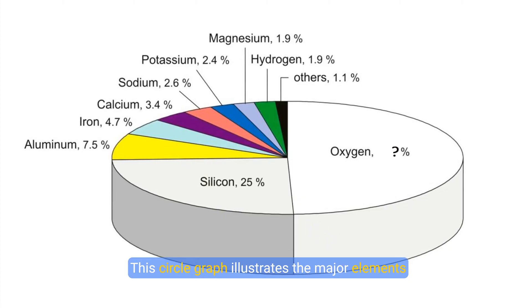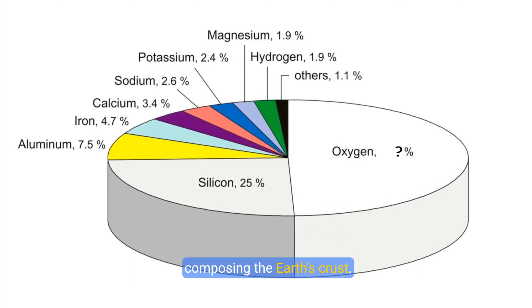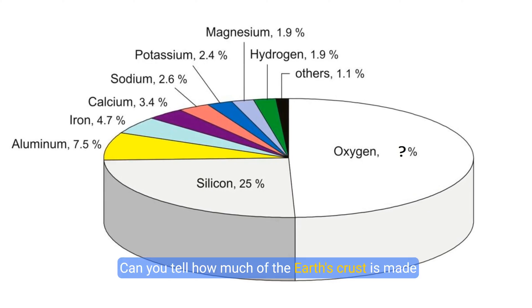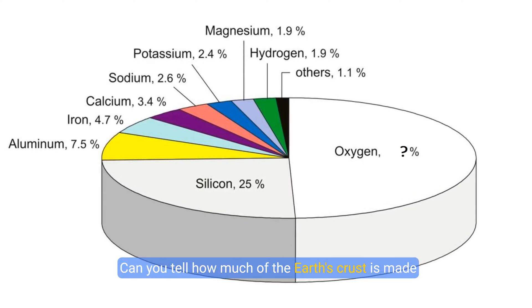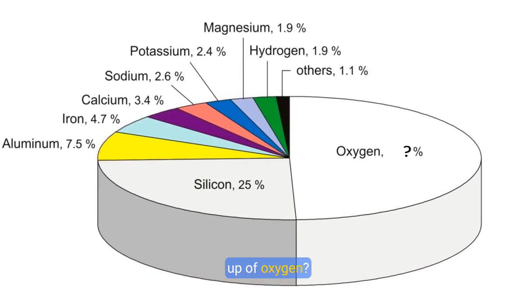This circle graph illustrates the major elements composing the earth's crust. Can you tell how much of the earth's crust is made up of oxygen?